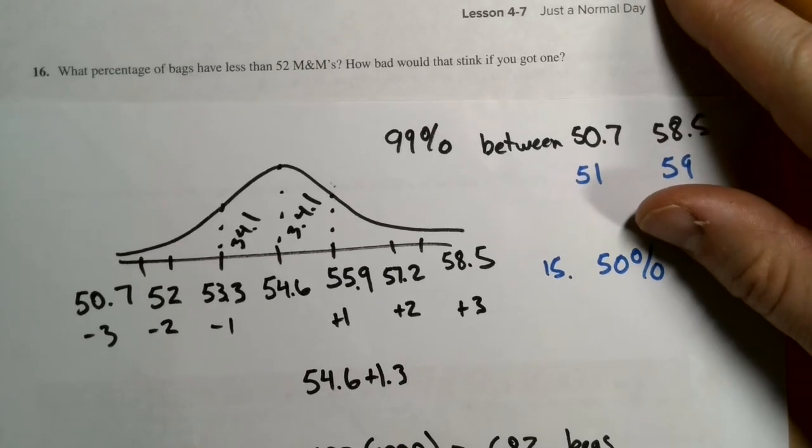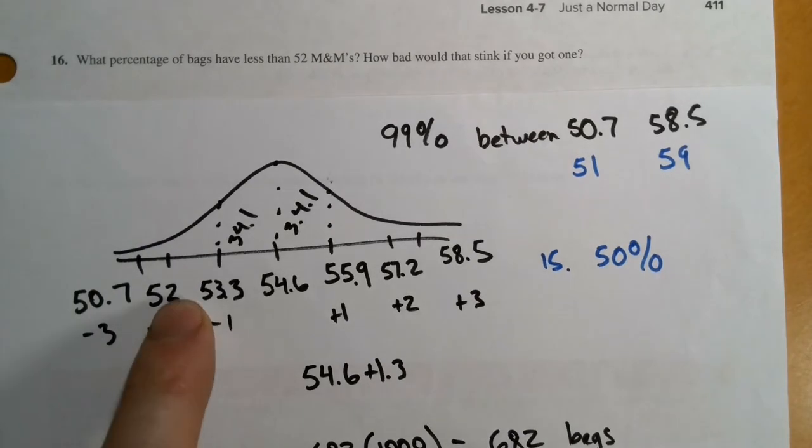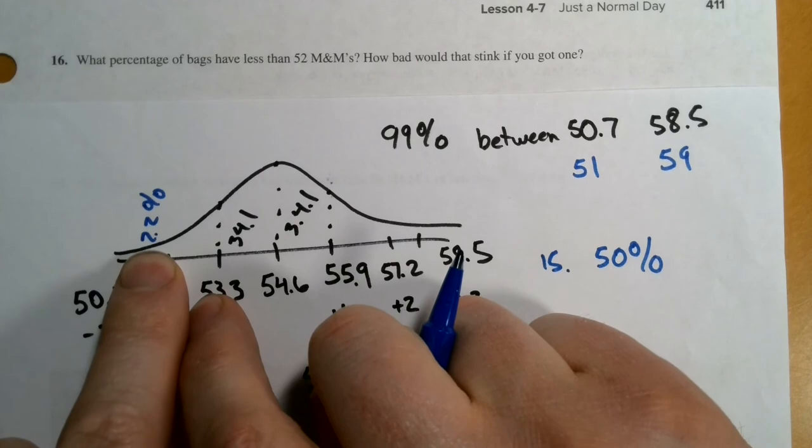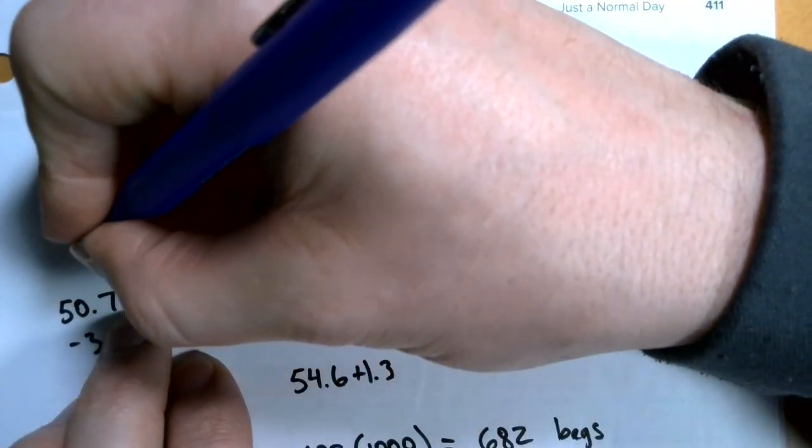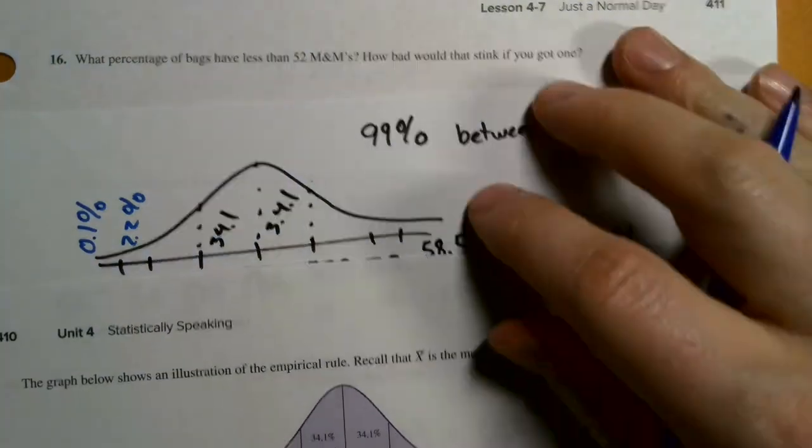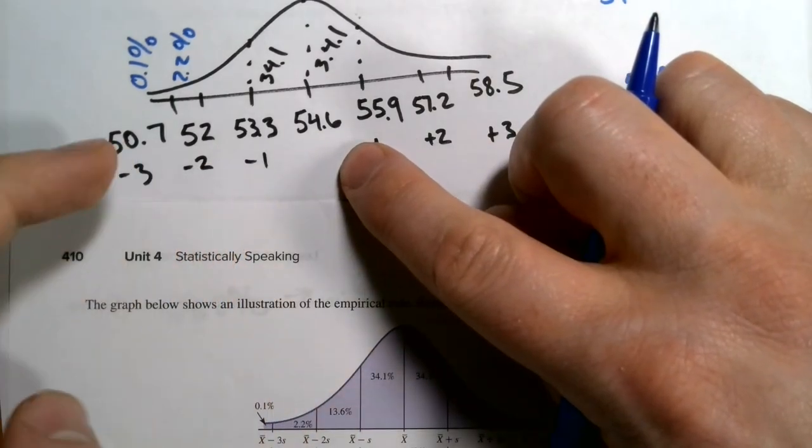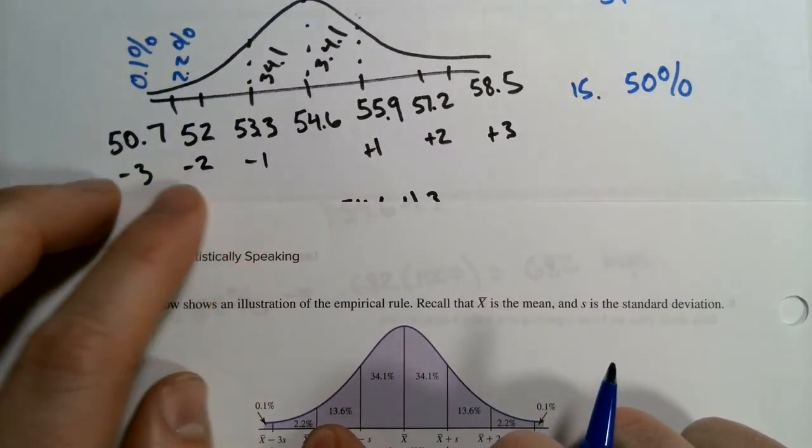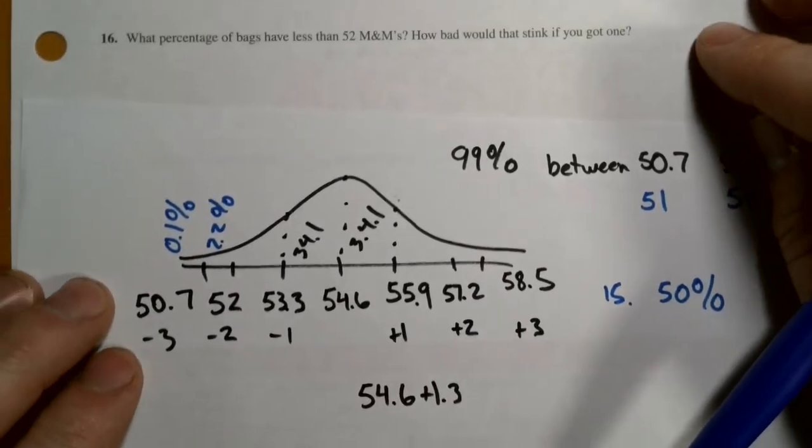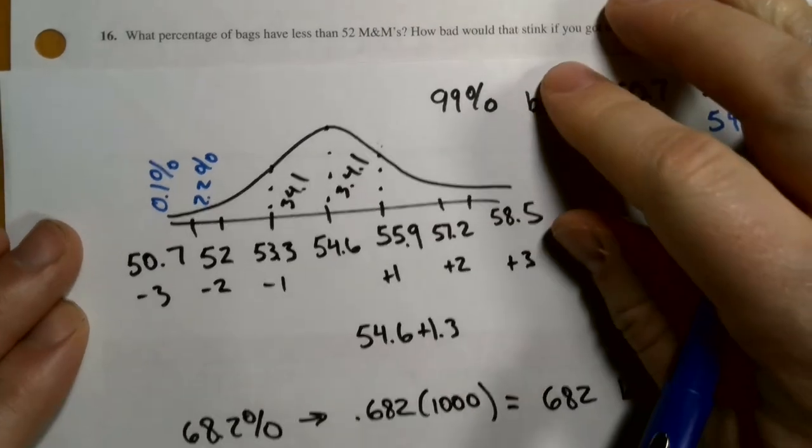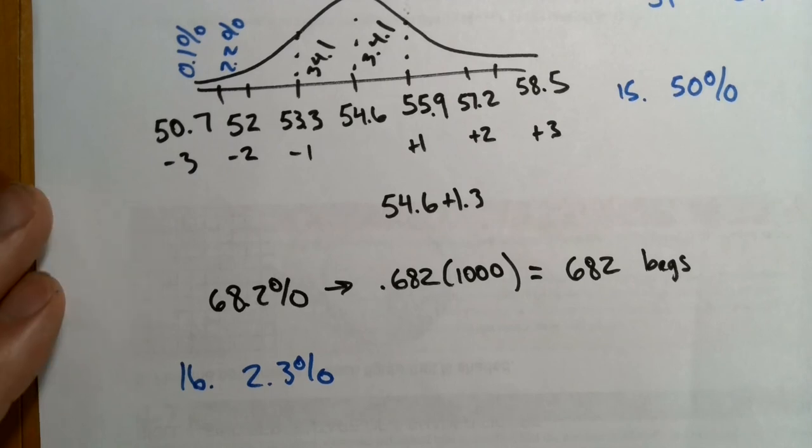16 says, what percentage have less than 52? Well, 52 is an exact value. So this is one case where we can use the empirical rule to estimate a fairly exact value. Note that between 50.7 and 52, that's 2.2%. And below 50.7 is 0.1%. And where I'm getting that is our handy empirical rule from this graph. So two standard deviations away between the three and the two, that's 2.2% of the data. And then below three standard deviations is 0.1. So the answer to number 16, less than 52, what percent? Well, that's 2.3%. That's just the sum of these two values. That's a really small percentage.